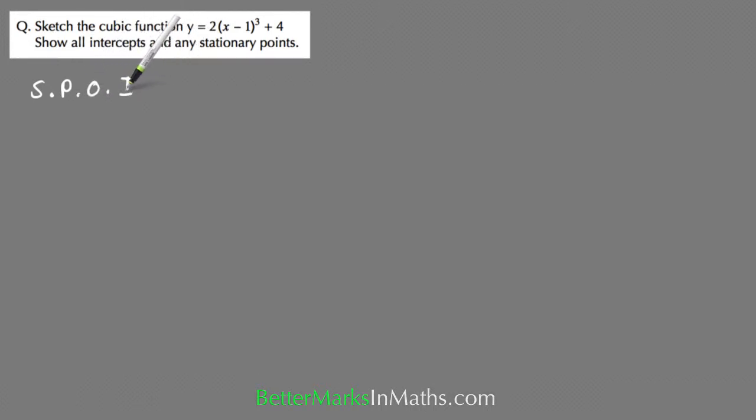The way you do that is very similar to getting the turning point from a quadratic equation. It's the value of x that makes this bracket 0, which is 1, and whatever this number here is, 4. So the stationary point of inflection is at 1 comma 4.